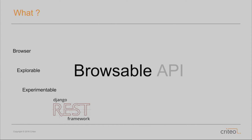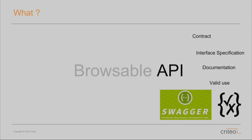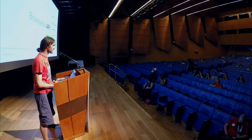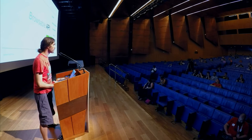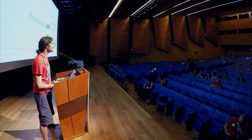And there is also the word API. So an API is a kind of contract. It can be very explicit, like if you're declaring a Swagger specification file, or it can be implicit like in the documentation. The contract defines the valid use of the service that is linked to the API, or the operations you can do with this service.